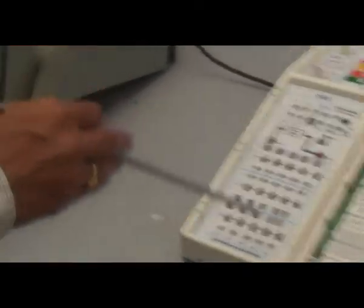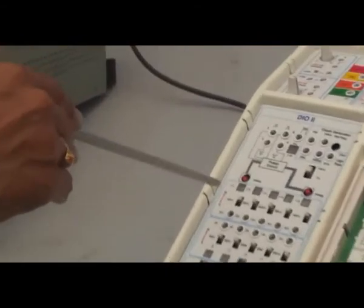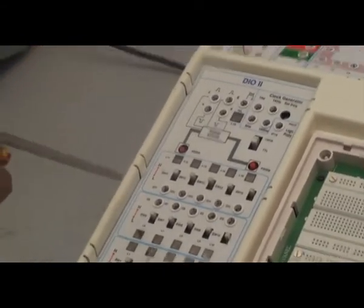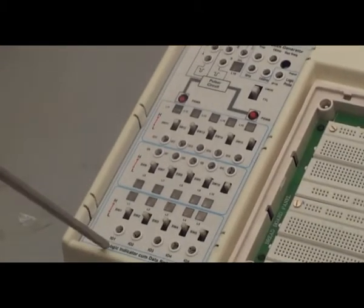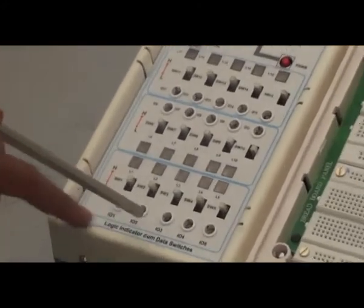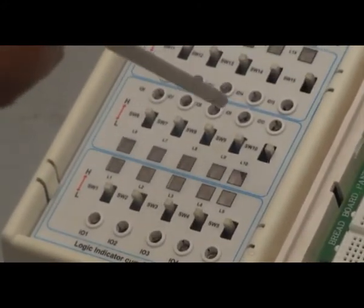This is DIO 2. This is logic indicator and data switches. Here 15 switches are there. Upper position is high, lower position is low. 15 data switches you can use at a time.